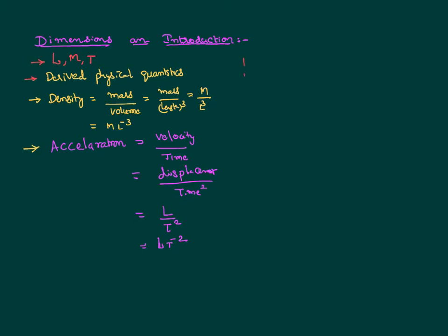For example, to write the dimensional formula of force — we know the formula F equals MA. M is a fundamental quantity represented with capital M. Acceleration is rate of change of velocity, and velocity can be further expressed as length by time, with one more time in the denominator. So, the dimensional formula of force is M L T power minus 2. This way, we can write the dimensional formula of any physical quantity — we are simply expressing a derived physical quantity in terms of fundamental quantities, and this kind of expression is called a dimensional formula.